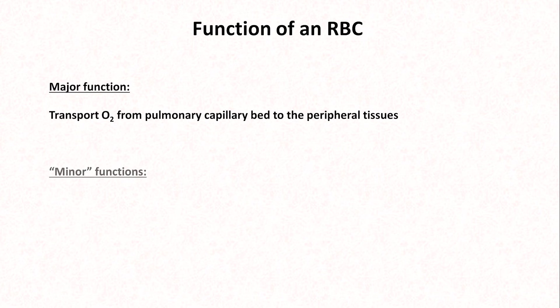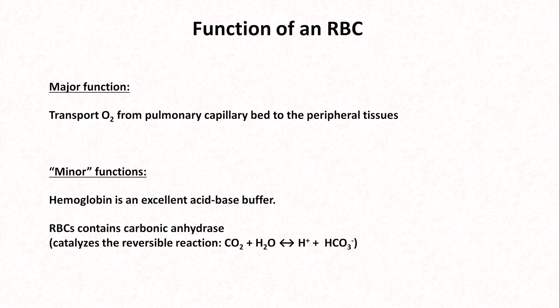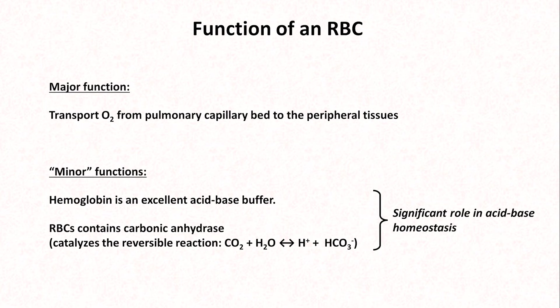Significant minor functions of red blood cells include the fact that hemoglobin itself is an excellent acid-base buffer, and RBCs also contain a large amount of carbonic anhydrase, which catalyzes the reversible conversion of carbon dioxide and water to hydrogen and bicarbonate ions, thus significantly contributing to acid-base homeostasis.